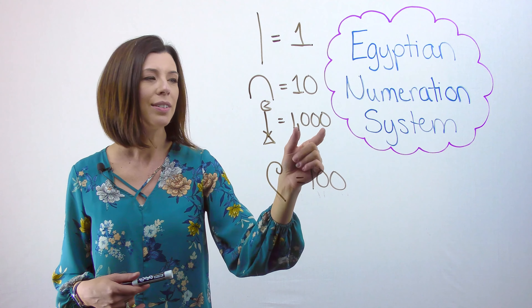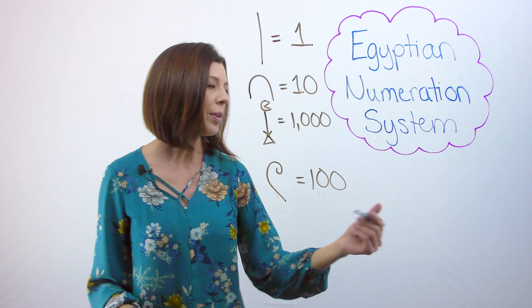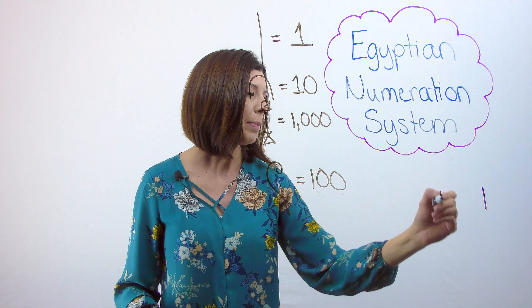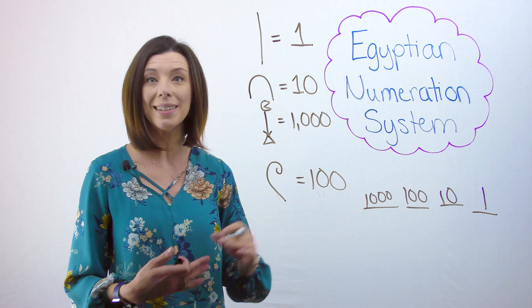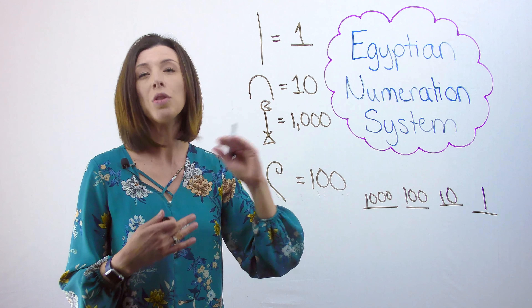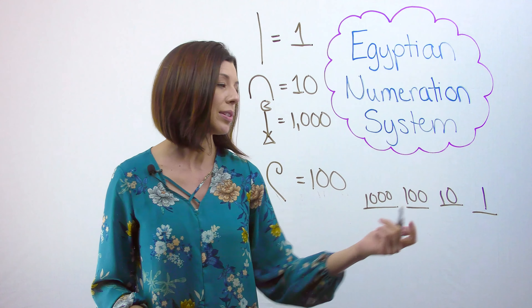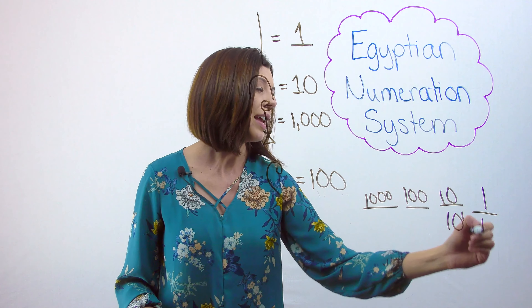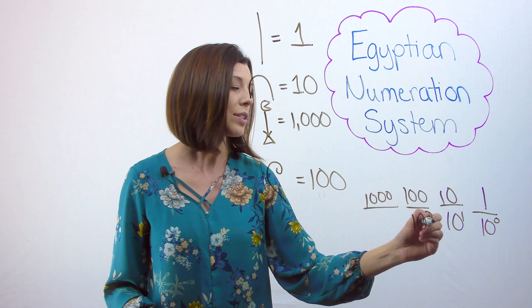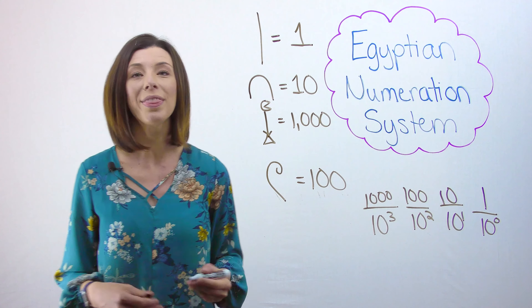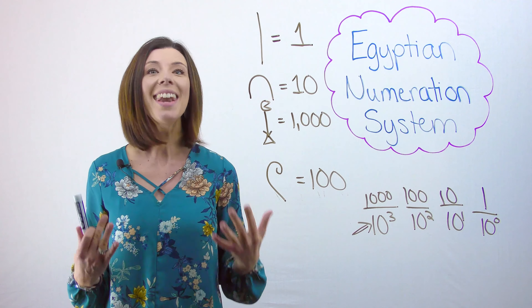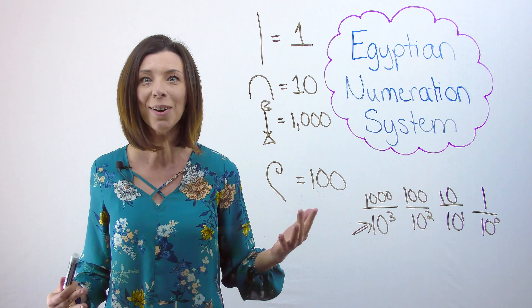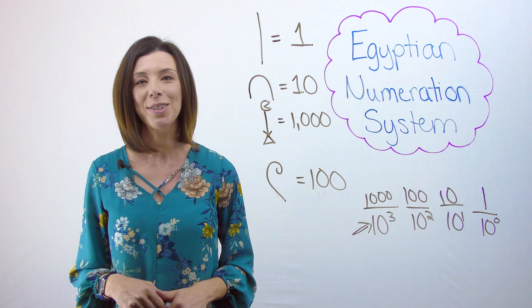Let's finish by thinking about what base the Egyptians were operating in, and how do I know that? I see that the smallest number I ever have is 1, then I go up to 10, I can see 100 here, and 1,000. So if I'm going to write this out in my bases, what base is going to be underneath them so that I can multiply it to the power of zero, the power of one, the power of two, the power of three, and so on, to get these numbers? 10 to the power of one is 10, 10 to the power of zero is 1, 10 squared is 100, and 10 cubed is 1,000. I can easily see that the Egyptians were operating in base 10.